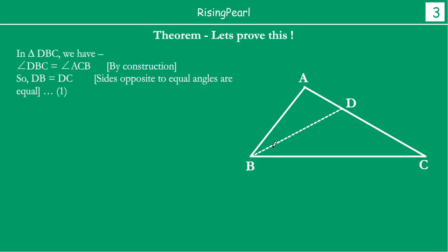Now what we have is angle DBC equal to angle ACB by our construction. These two angles are equal. If you take triangle DBC, you can see that these two angles are equal. This means that the two sides opposite to those equal angles are equal, because sides opposite to equal angles are equal. Therefore BD must be equal to DC — that is, BD equals DC.